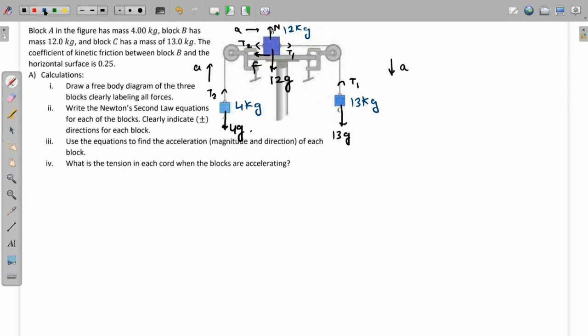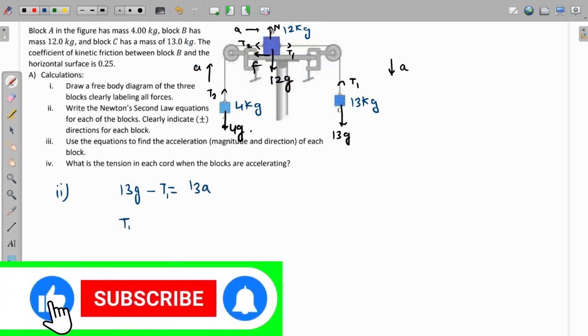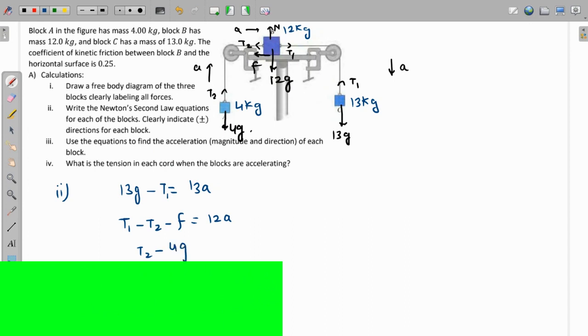If you have to write Newton's law, then for 13 kg the Newton's law is going to look like 13g minus T1 equals 13a. For this guy, 12 kg, it's going to look like T1 minus T2 minus friction force equals 12a. And for this guy it's going to look like T2 minus 4g equals 4a.